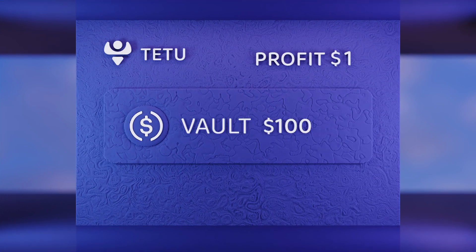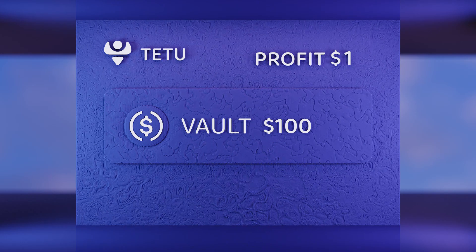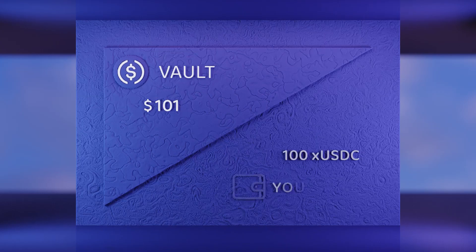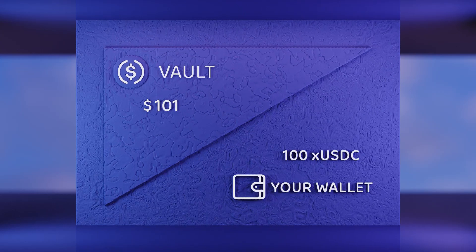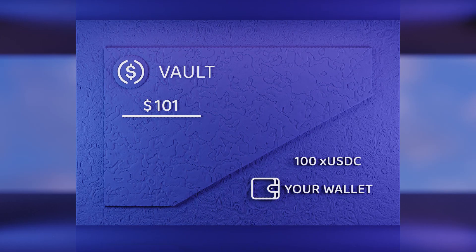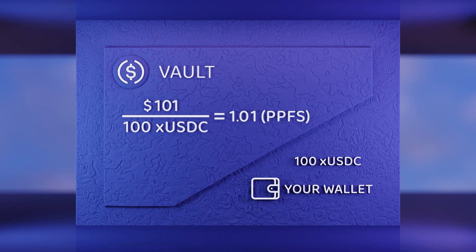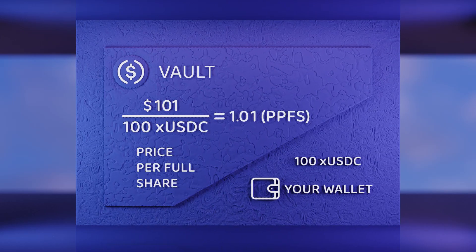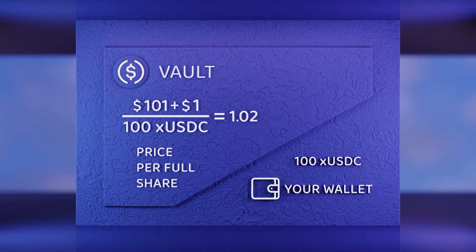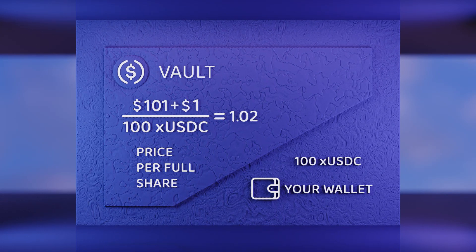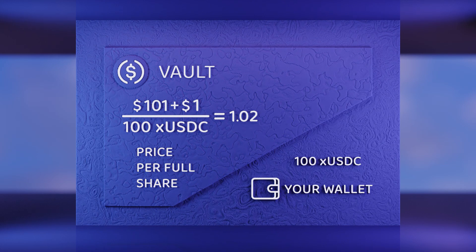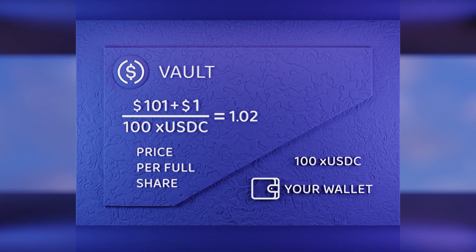Over time, your deposit generates yield farming profits. The amount deposited is still represented by the 100X USDC, which now has an increase in its price per full share, or PPFS. As deposited tokens earn yield farming profits, X USDC's price per full share increases, providing a larger amount of USDC at the time of withdrawal.